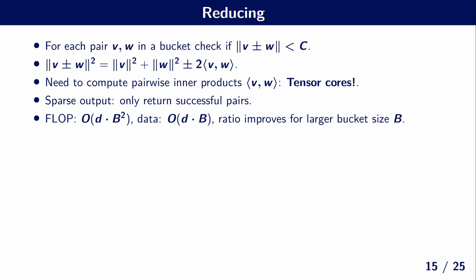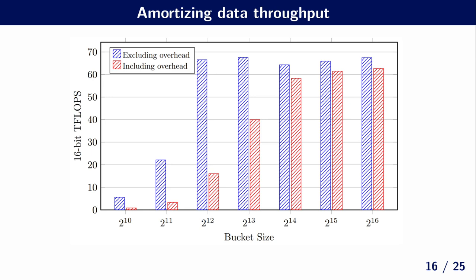Note additionally that the number of computations we need to do to compute all these pairwise inner products is squared in the bucket size B, while the data you need to send to the GPU is only linear in the bucket size B. So this ratio between the amount of computation you do and the data you have to transfer improves for larger bucket sizes.